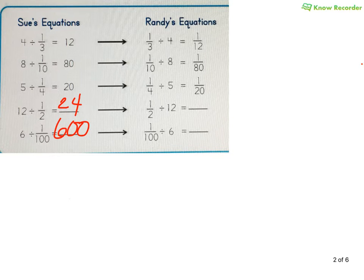When I look at Randy's equations, Randy over here is starting with all fractions and dividing by whole numbers. So when I see my answer over here, I'm noticing they're all fractions. They're actually less than what I started with. And that also makes sense, because this is saying I have a third.